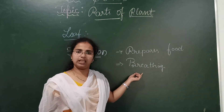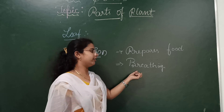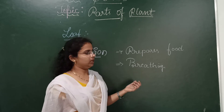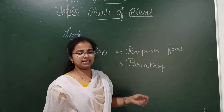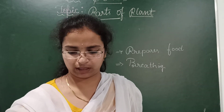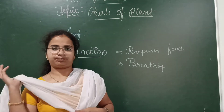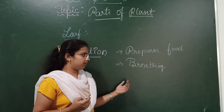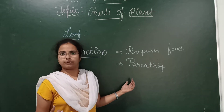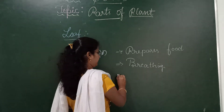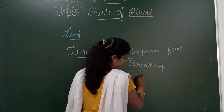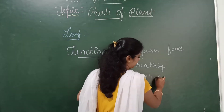That exchange of gases is through the leaf, and therefore leaf helps plants for breathing. Not only that — some plants also store food in their leaves. For example, spinach and coriander.